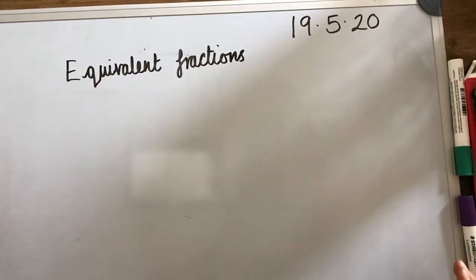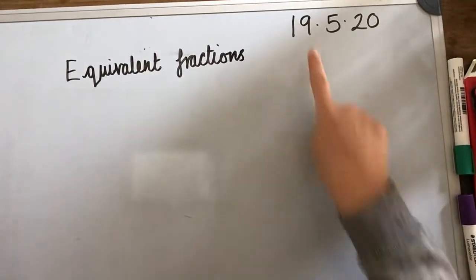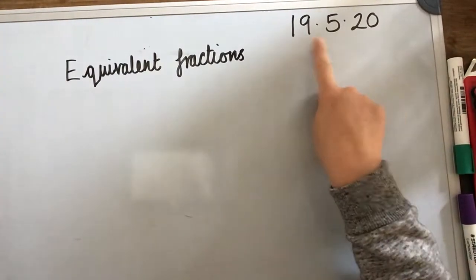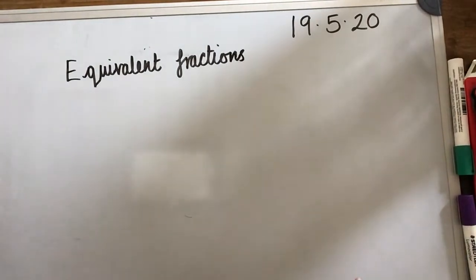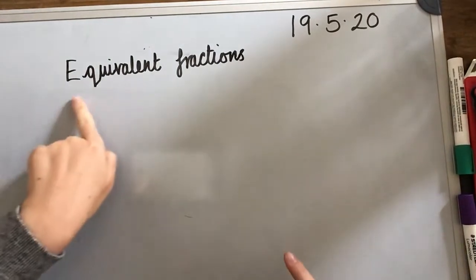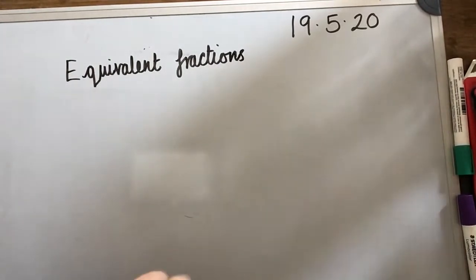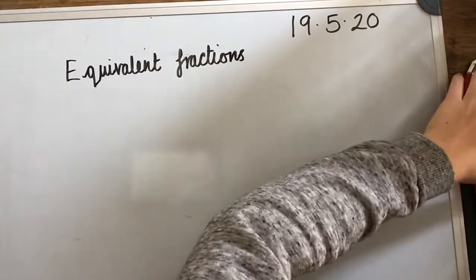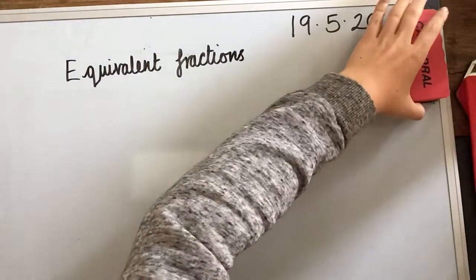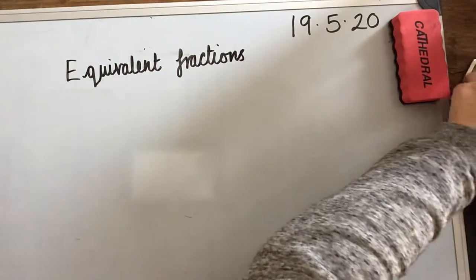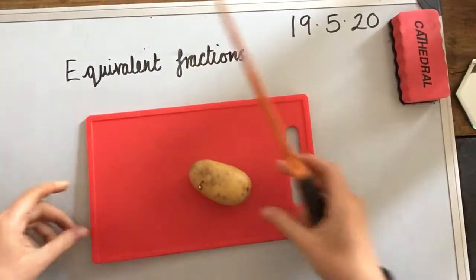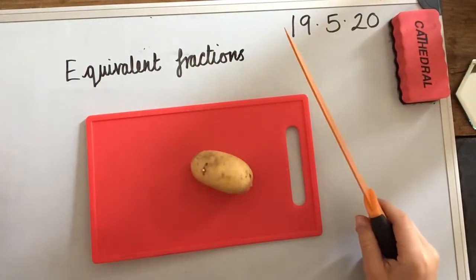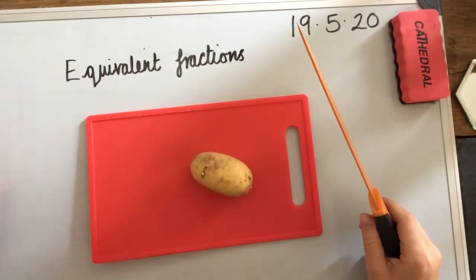Hello, Year 3. This is today's maths lesson for the 19th of May. We're going to look at equivalent fractions today. Now, equivalent means the same. So, we're looking at fractions that might have a different numerator and denominator, but they mean the same thing. They're equal.